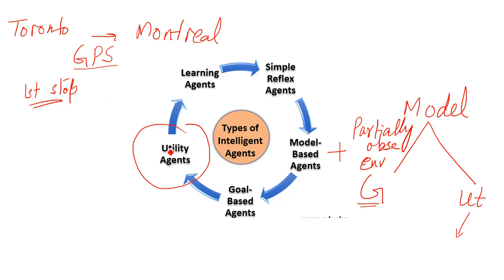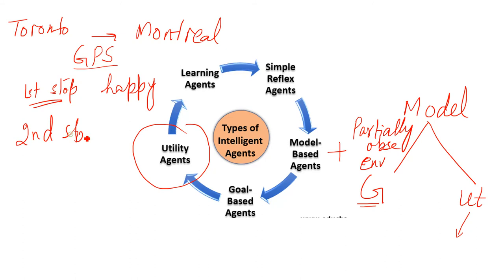At each stop, we are checking the utility function — whether the agent is happy or unhappy. At the first stop, the agent is happy because we reached smoothly and according to our time. After another hour, we make our second stop and check again. We reached on time, the road was smooth, no problem — so it is happy again.